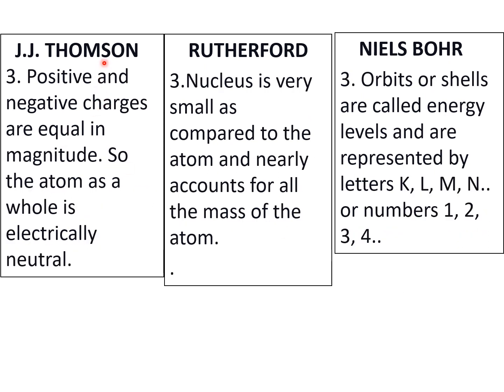Third point: J.J. Thomson said positive and negative charges are equal in magnitude. Positively charged sphere and the negatively charged electrons which are embedded in the sphere. So he said positive and negative charges are equal in magnitude, so the atom as a whole is electrically neutral because if the magnitude is equal and the charges are opposite signs, they will cancel each other out and the atom will be electrically neutral.